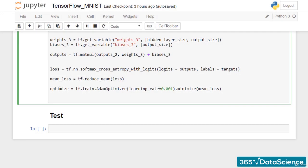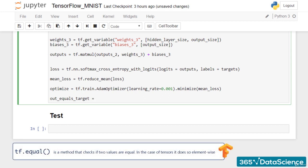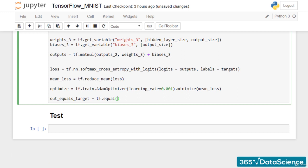Okay, let's implement that in our problem with some coding. I'll call the variable out_equals_target. The method that checks if two values are equal in TensorFlow is called tf.equal. It returns a boolean, 1 if they match, or 0 if they don't. So, tf.equal of... What are we comparing again? The argmax of the outputs and the argmax of the targets.